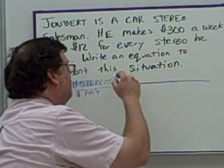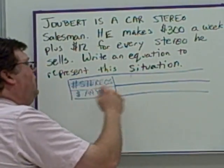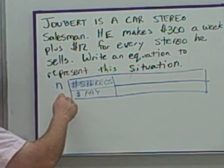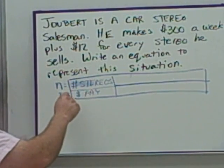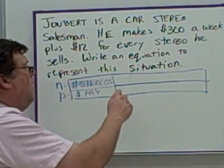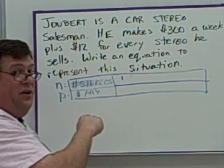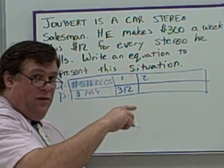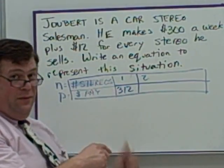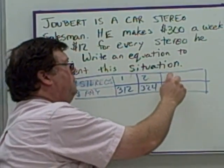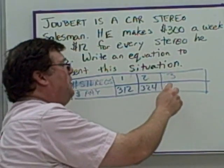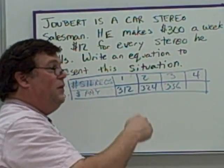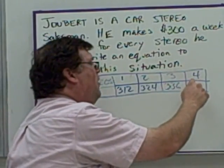They didn't declare variables for us in this one, so we have to declare them ourselves. Number of stereos — let's call it N for number. Total pay — let's say P for pay. So N is the number of stereos and P is the pay for the week. If he sells one stereo, he gets $300 for the week plus $12 for the stereo — that's $312. Two stereos: 2 times $12 plus $300 equals $324. Three stereos: 3 times $12 is $36, plus $300 equals $336. Four stereos: 4 times $12 plus $300 equals $348.